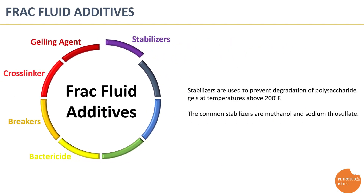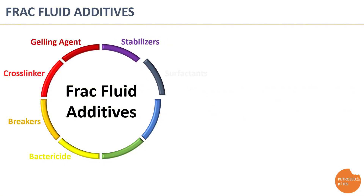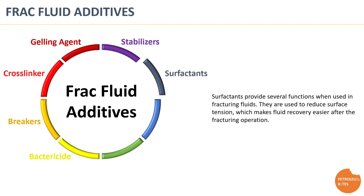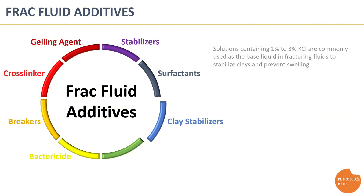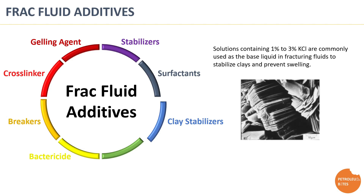Stabilizers are used to prevent degradation of the gel, especially when frack fluid is used in high downhole temperatures that are close to or higher than the water boiling point. The commonly used stabilizers are methanol and sodium thiosulfate. Surfactants are used to reduce surface tension between frack fluid and formation fluid, which makes fluid recovery easier after the fracturing operation. Solutions containing potassium chloride are commonly used as the base liquid in fracturing fluid to stabilize clay and prevent swelling.